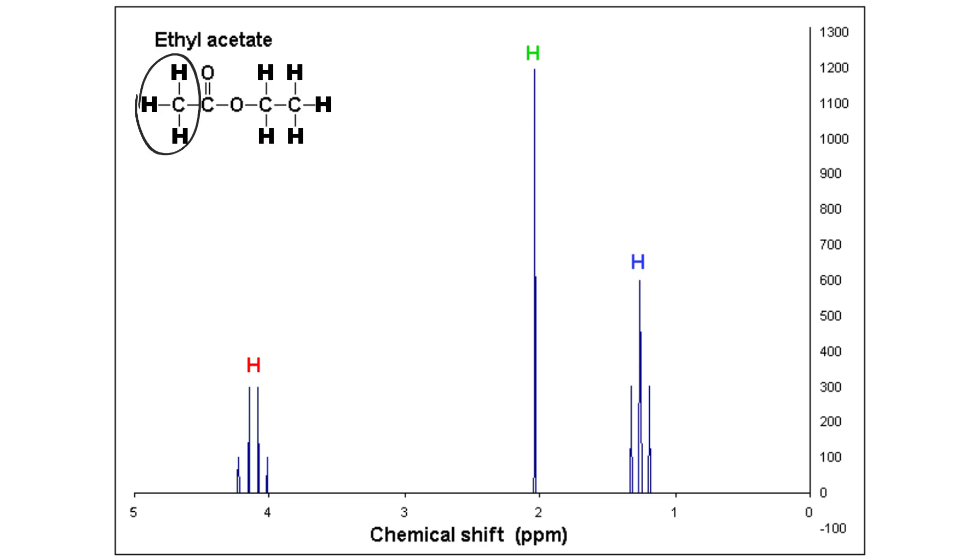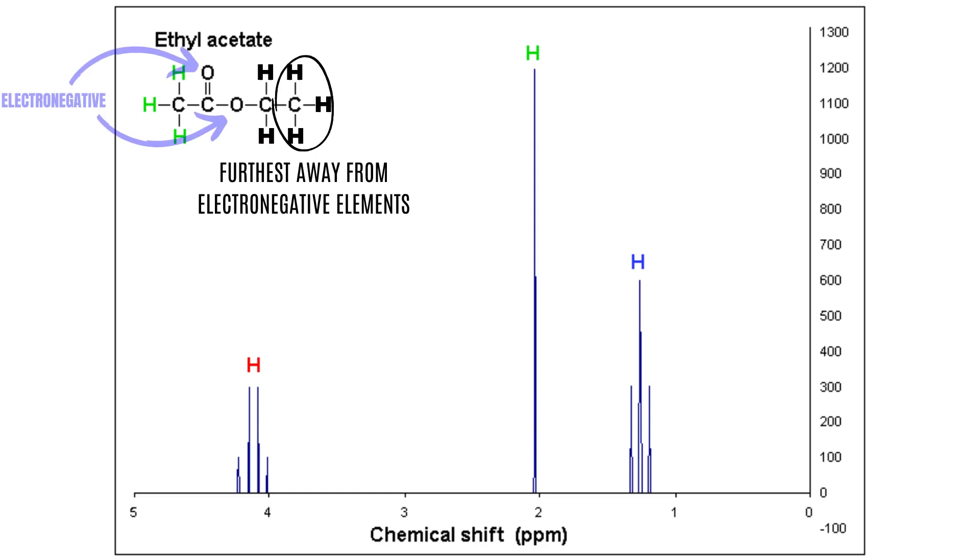The first thing that is easy to note is that there is only one group with no proton neighbors. This means that this group will not split and we only have one peak like that. The second thing that is easy to note is that this group is furthest away from any electronegative elements. In this case, the most electronegative elements are the two oxygen atoms. This means that this group will be located furthest to the right.